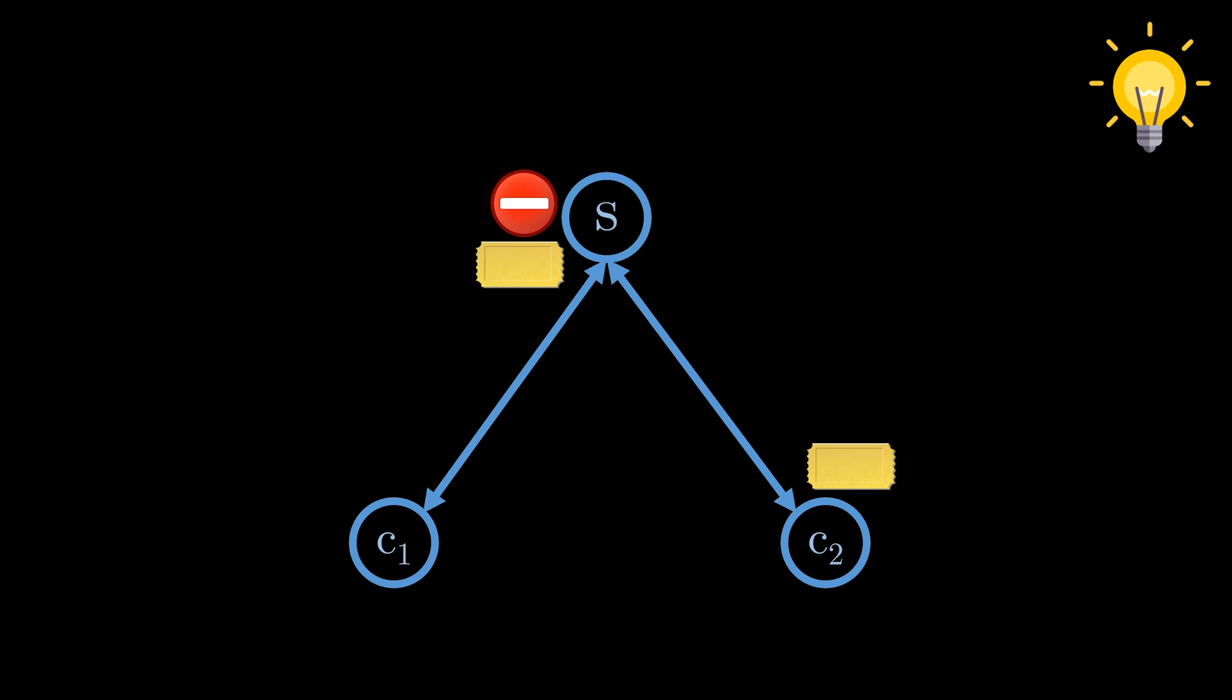A nice property is that tickets can easily be implemented using simple counters. In this example, the ticket number one is no longer accepted because ticket number two is the latest ticket.